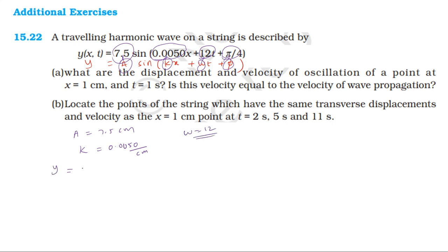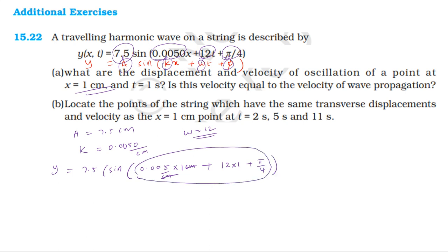y is equal to 7.5 into sin of (0.005 per cm × x). X value is 1 cm — dividing by per cm, the unit of k is per cm and x is 1 cm. Plus omega, omega is 12, time is 1. Plus 5π/4. So we get 0.005 plus 12 plus 5π/4.